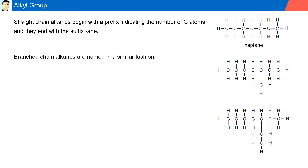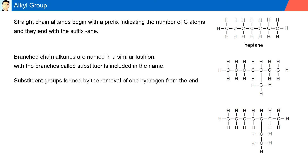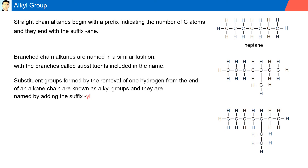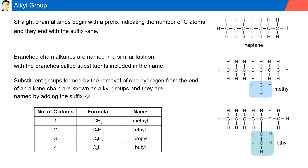Branched chain alkanes are named in a similar fashion, with the branches called substituents included in the name. Substituent groups formed by the removal of one hydrogen from the end of an alkane chain are known as alkyl groups, and they are named by adding the suffix -YL. For example, methyl, or ethyl. Similarly, three carbon alkyl groups are called propyl, or four carbon butyl, and so on.